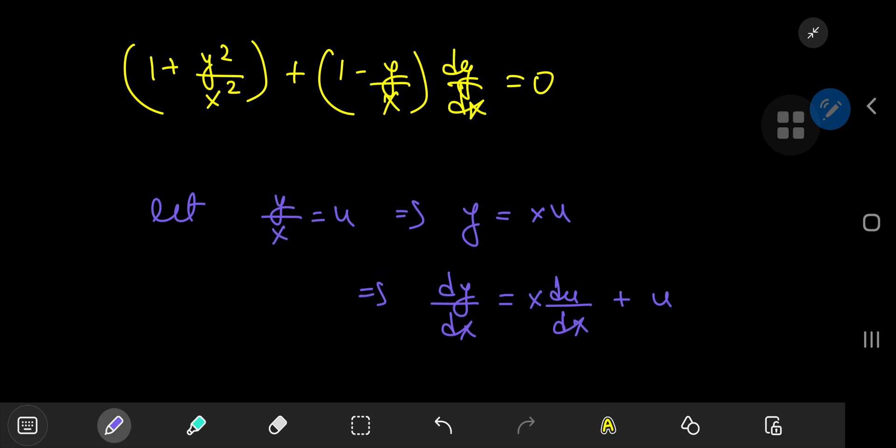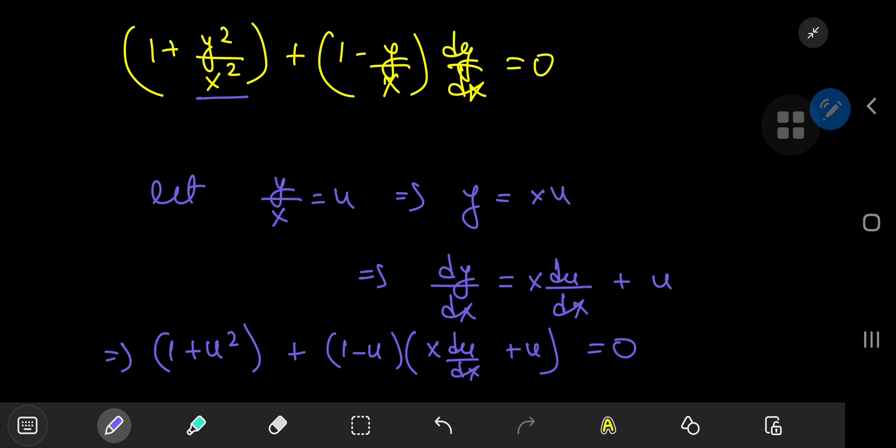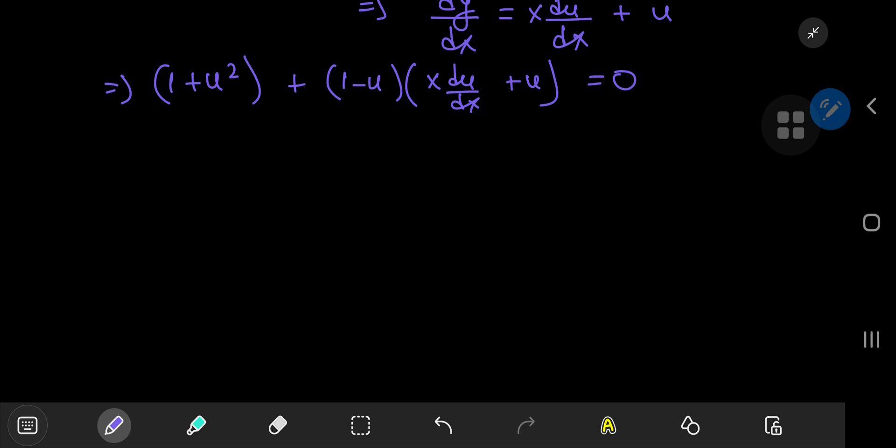And this substitution, moving from the y and x world to the x and u world makes our job much simpler. It implies that you have one plus u squared plus one minus u all times x du by dx plus u. And this here equals zero. So some rearrangement is in order. That means we have x times du by dx times one plus u being equal to negative one plus u squared divided by one minus u. And you can get rid of the negative sign by switching up the order of one and u in the denominator of the right hand side. And things are looking good so far.